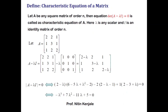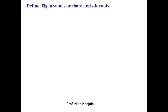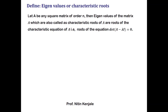Next we are going to see what is eigenvalue of the matrix and how this characteristic equation is helpful in finding it. Let A be any square matrix of order n. Then the eigenvalues of matrix A, also known as characteristic roots of A, are nothing but the roots of the characteristic equation of A — that is, roots of determinant of A minus lambda I equals zero.